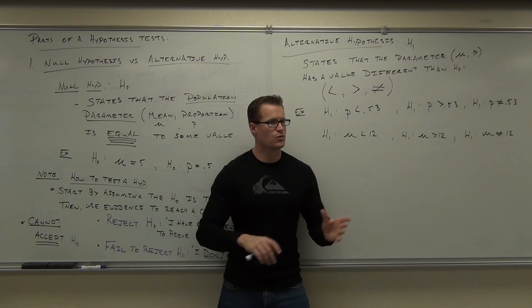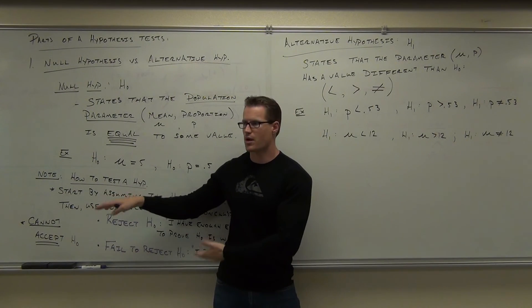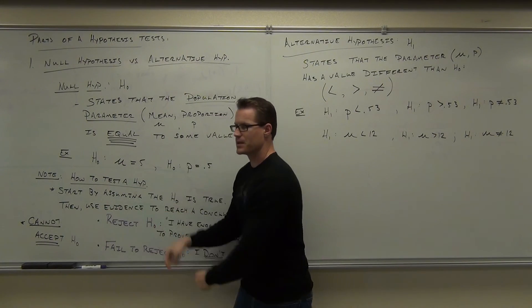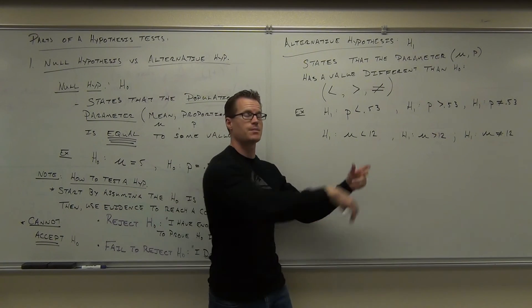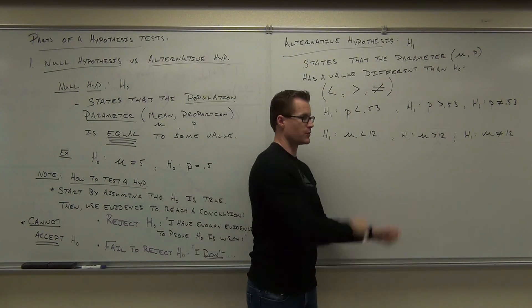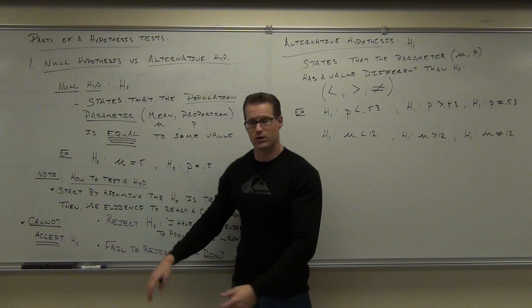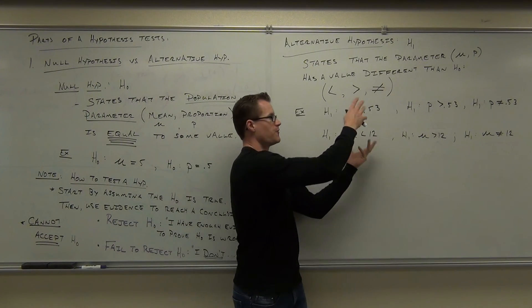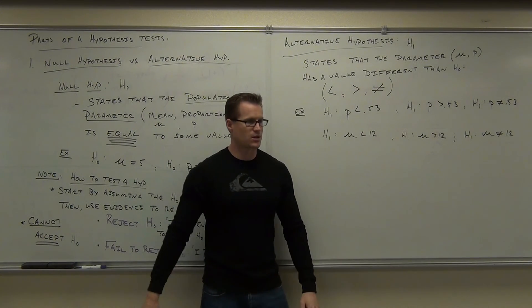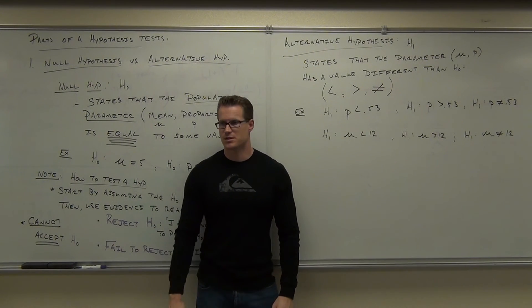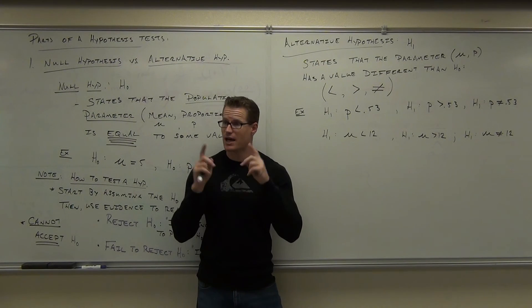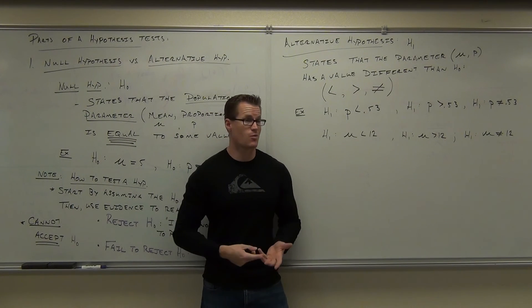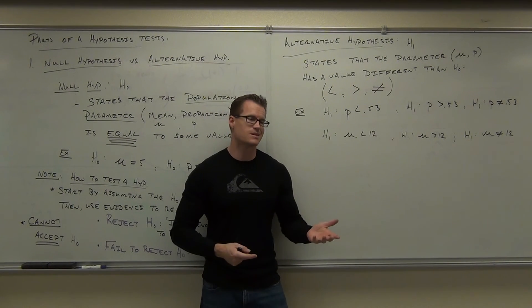If you prove the null hypothesis wrong, that means you accept the alternative. If you fail to prove the null hypothesis wrong, then you fail to accept the null hypothesis. They work together — you have to have both. You can't just prove a statement right, not in statistics. The evidence is only there to convince.